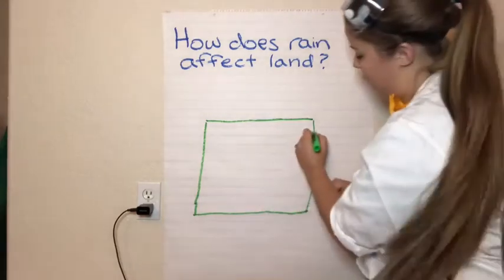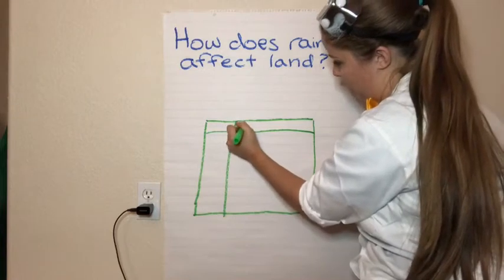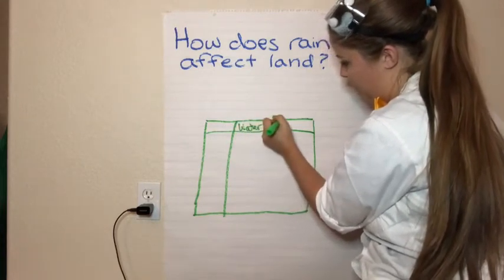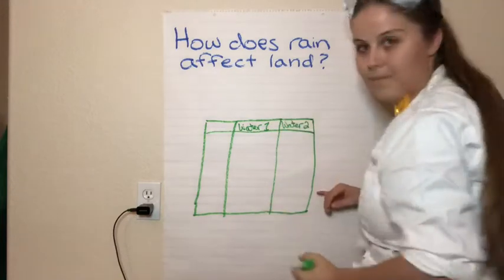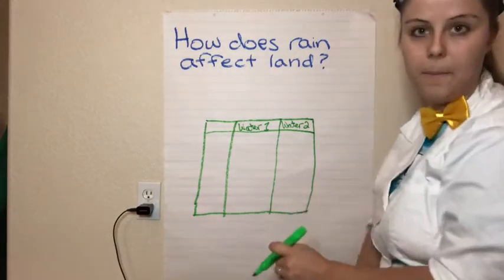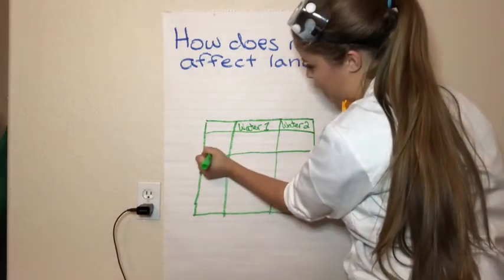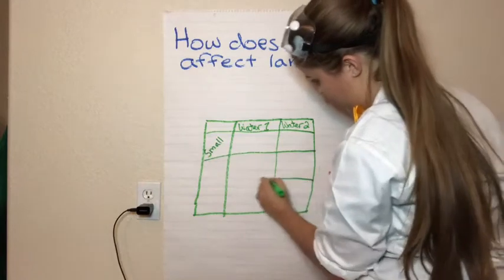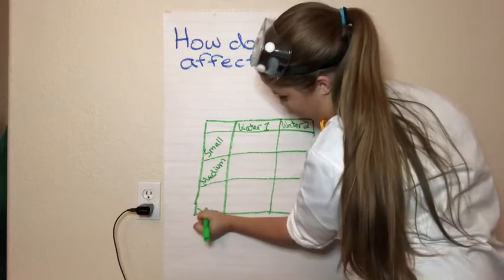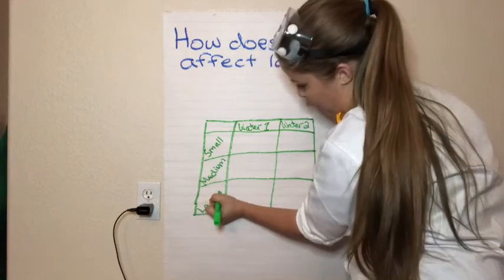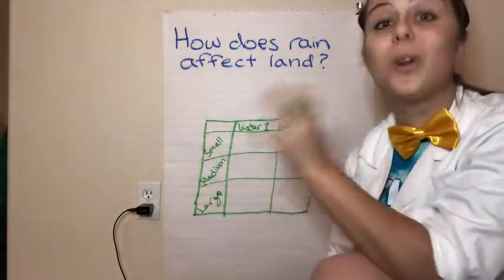I want you to make a box — make a line at the top. This is going to say Water One. Make another line. This is going to say Water Two. Now I'm going to write small, I'm going to write medium, and I'm going to write large. These are where we're going to record our observations.